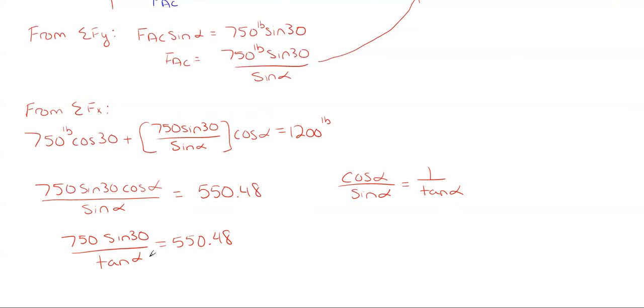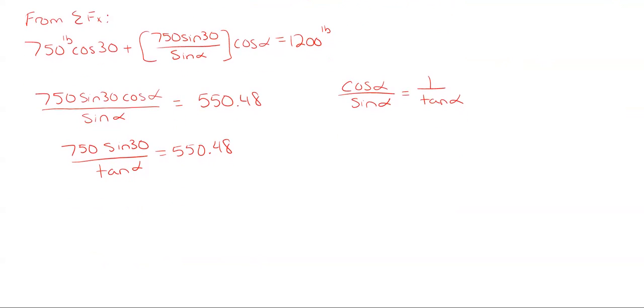All righty, so now that I have alpha just in a single place here, it's much easier to solve for. So I am just going to rearrange over here, so basically what we have is alpha is equal to the tangent inverse of 750 sine of 30 divided by 550.48. And that will give me, because this portion right here becomes 0.6812, so that angle then taking the tangent inverse of that gives me 34.3 degrees.